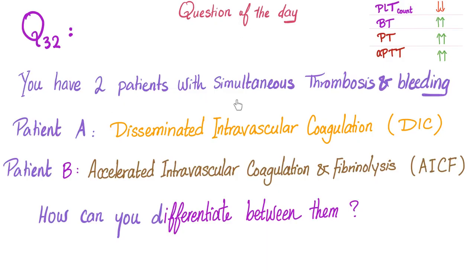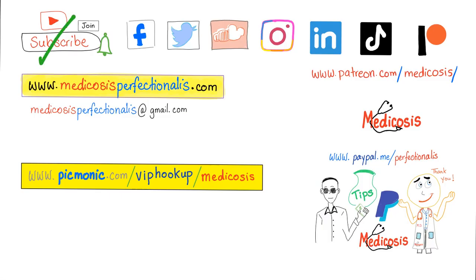Question of the day: you have two patients with simultaneous thrombosis and bleeding — one has DIC, the other has accelerated intravascular coagulation and fibrinolysis. When you run tests, both had the same results: low platelet count, prolonged bleeding time, prolonged PT, and prolonged PTT. How can you differentiate between the two? Let me know the answer in the comments — you'll find the correct answer in the next video on DIC.